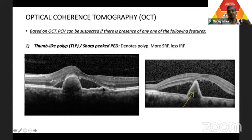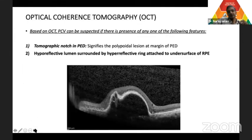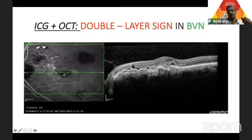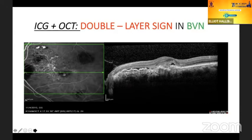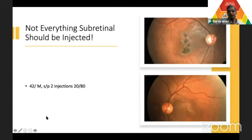If you see a thumb-like or sharp-peaked PED, it may signify PCV. Other OCT diagnostic tools for PCV include a notched PED or a double layer sign, corresponding to the branching vascular network. This is important because PCVs can bleed and may sometimes need treatment other than anti-VEGF. PDT is no longer available, but TTT or thermal laser can be given for visible polyps in these cases.